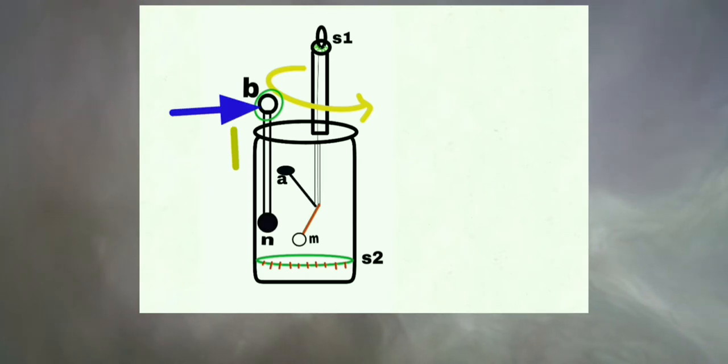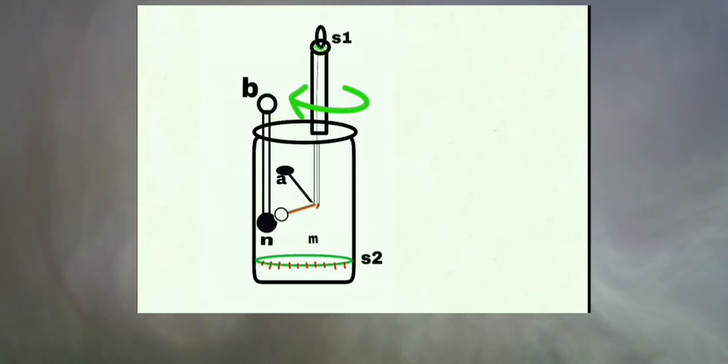Now, glass rod B is electrified so electricity moved toward and electrified the pith ball N. Again, at S1 equal S2 equal 0 degree position, the M and N pith balls were touched with each other.